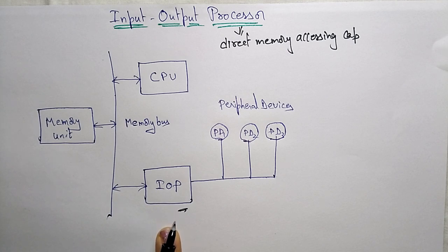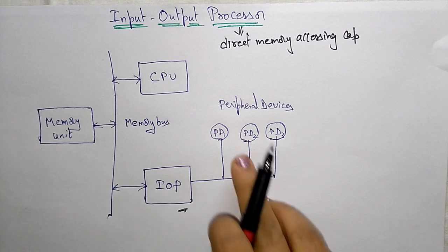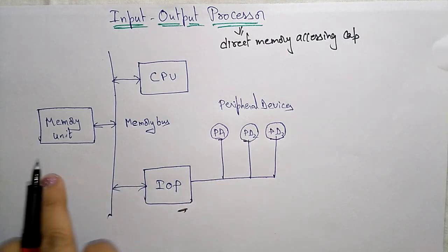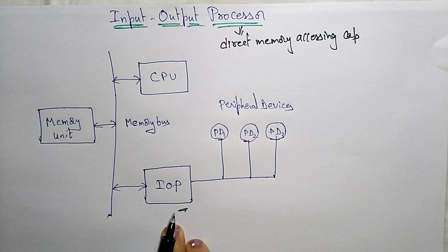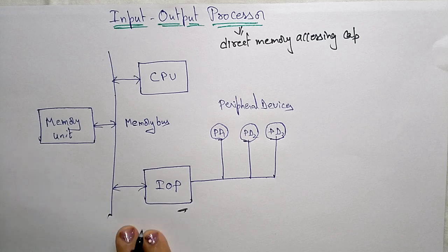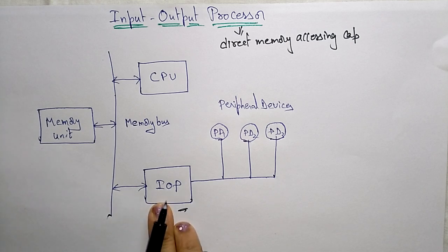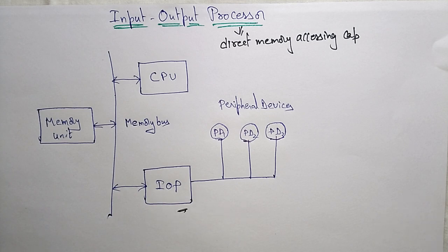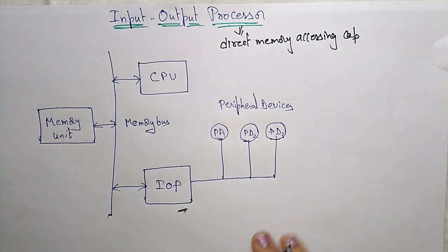The IOP can fetch and execute its own instructions — those coming from peripheral devices or taken from the memory unit. These Input-Output Processor instructions are designed to manage IO transfers only. Whatever input-output transfers of data or execution of instructions are required will be taken care of by this Input-Output Processor. Now let us see the block diagram.